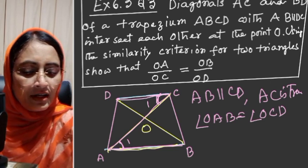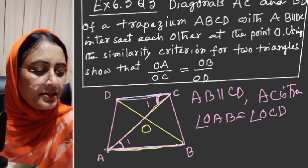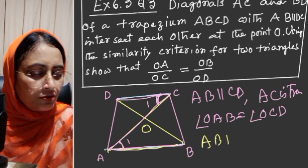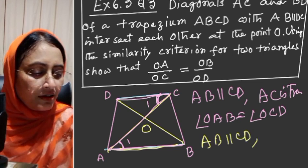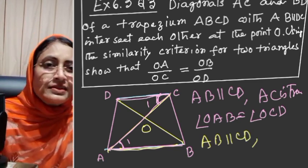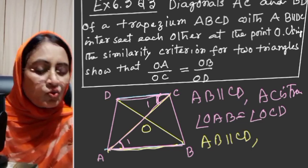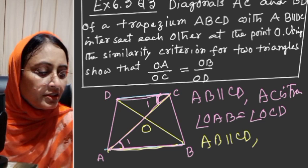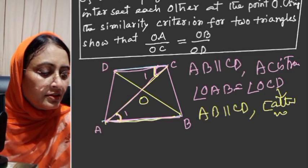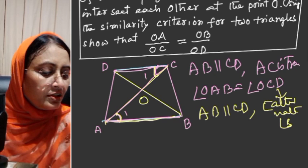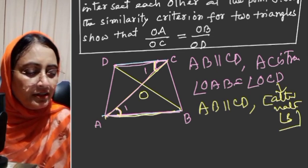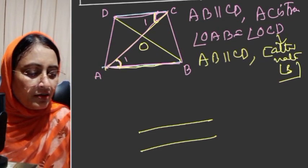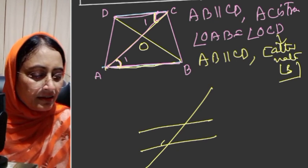Again AB is parallel to CD. I will use this basic knowledge the same way. This angle is equal to this angle, alternate angles. These are alternate angles which are always equal.